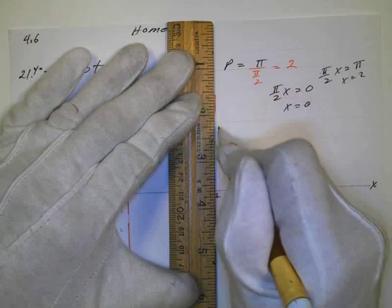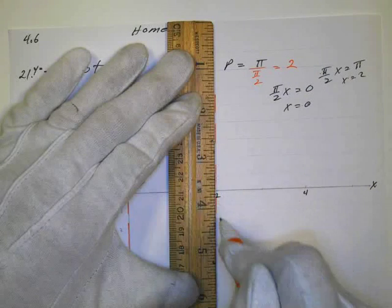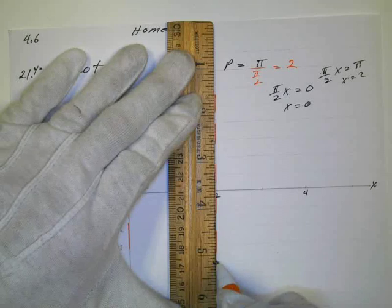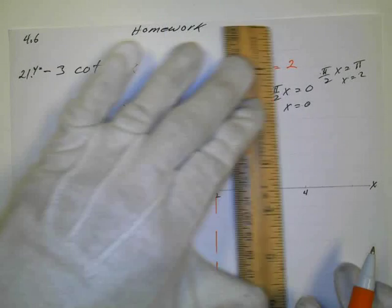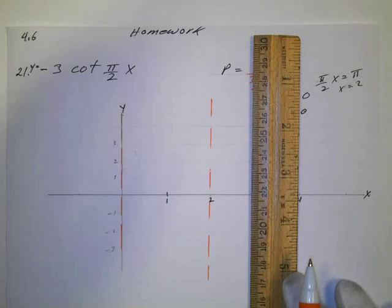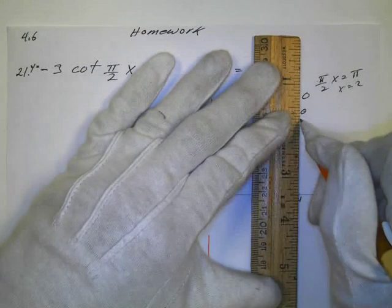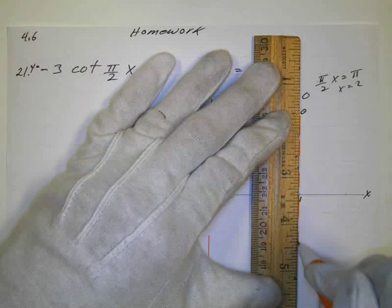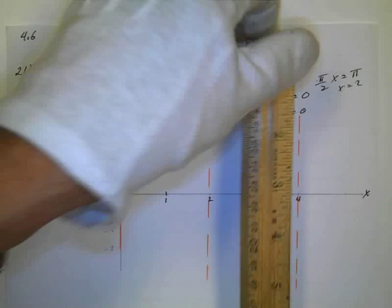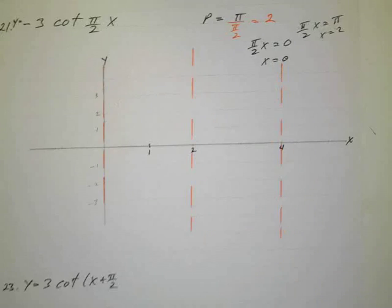That'll give me my period of 2 radians, and then I wanted to show 2 of those, so I'm going to go ahead while I've got this ruler here. I'll go ahead and put 2 more radians, so that'd be 4. So those are my asymptotes.